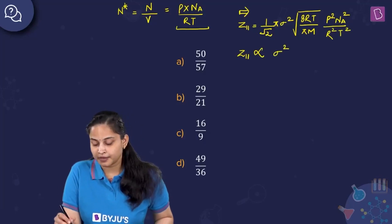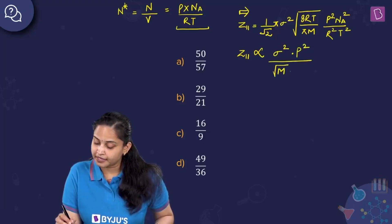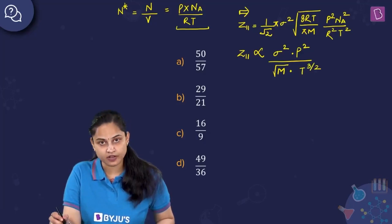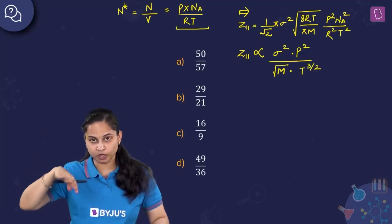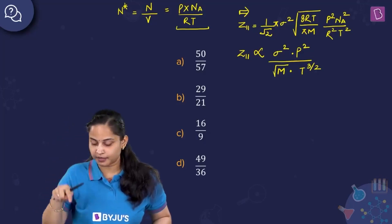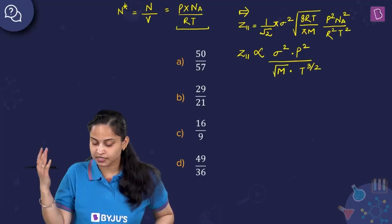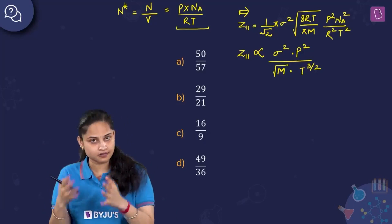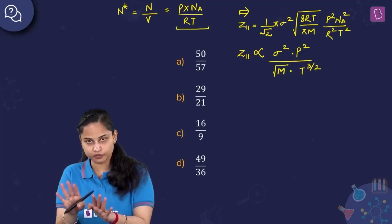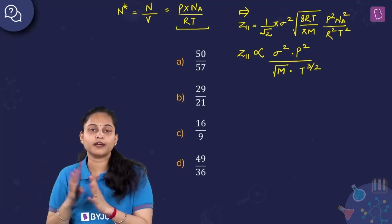The total number of binary collisions is directly proportional to σ² × P² × T^(3/2) / √M, where σ is molecular diameter, P is pressure, T is temperature, and M is molecular mass. All other terms (π, √2, √8, R, Nₐ) are constants.